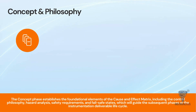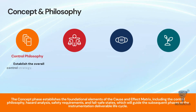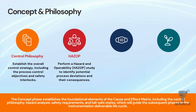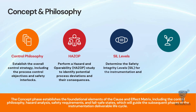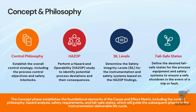Everything starts with the concept phase. Before we draw a single grid line, we must establish the control philosophy. This sets the strategy for our process control objectives and safety interlocks. During this phase, engineers perform a HAZOP — hazard and operability study — to identify what could go wrong in the process. Based on that study, we determine the safety integrity levels, or SIL, required for the system. Crucially, we also define the fail-safe states. If the power goes out or a wire is cut, should the valve close or open? Defining these states early ensures that the plant defaults to a safe shutdown condition in the event of a fault.